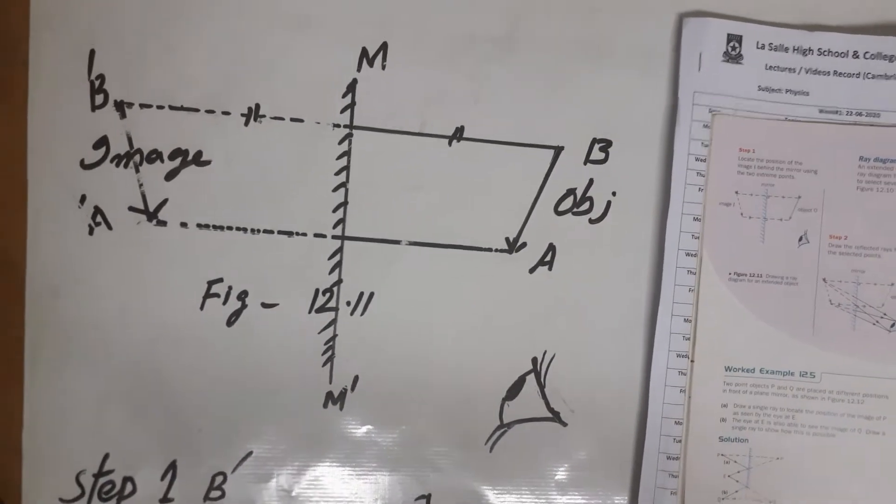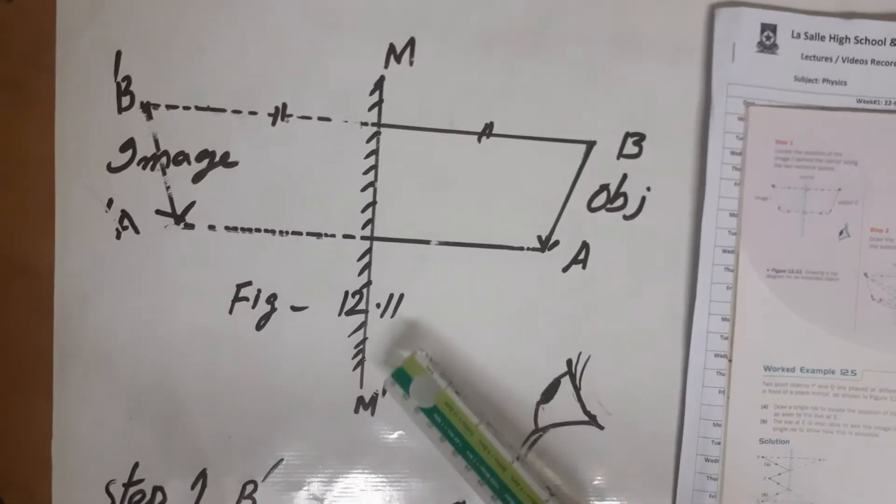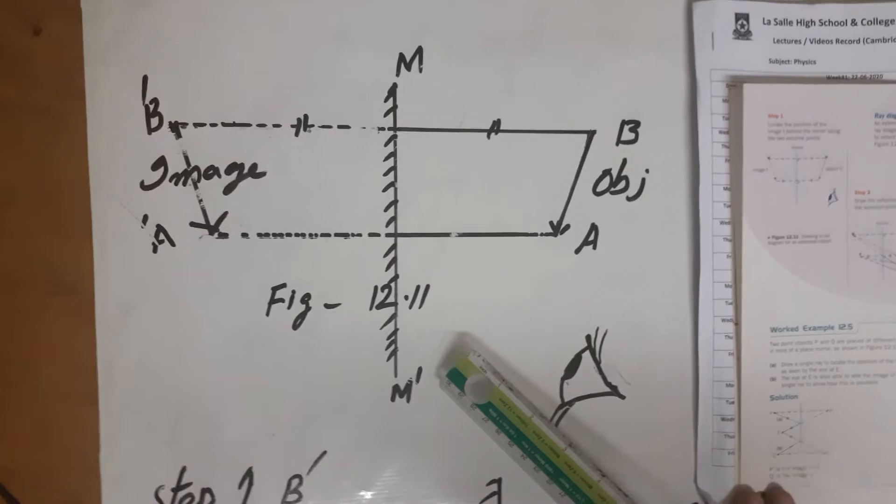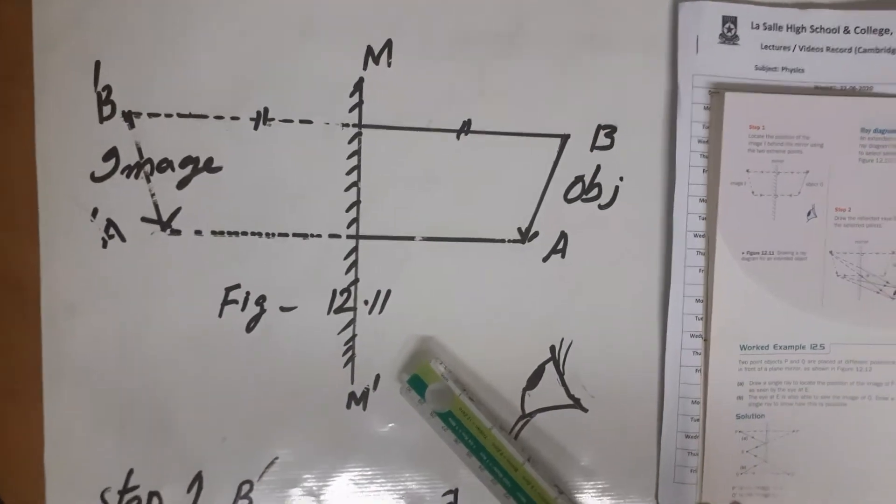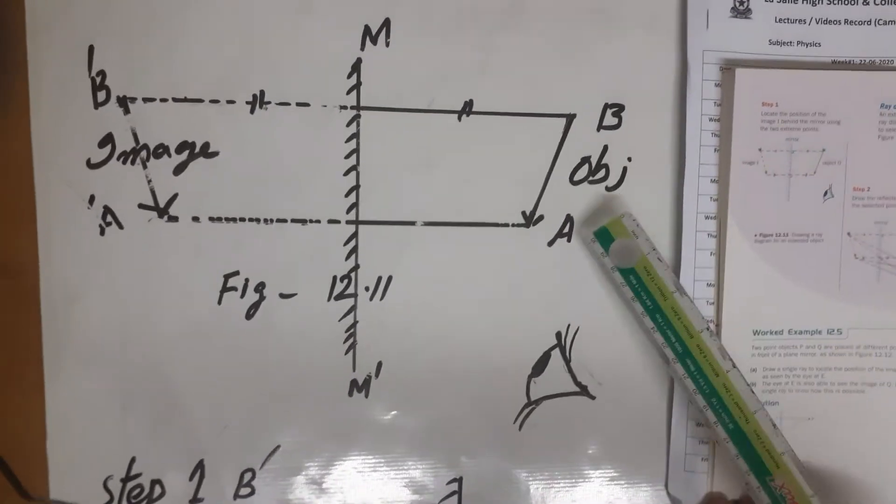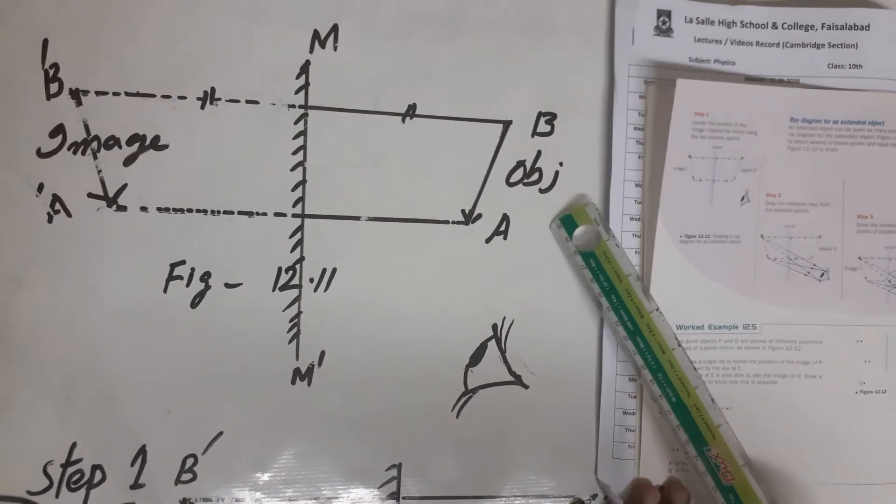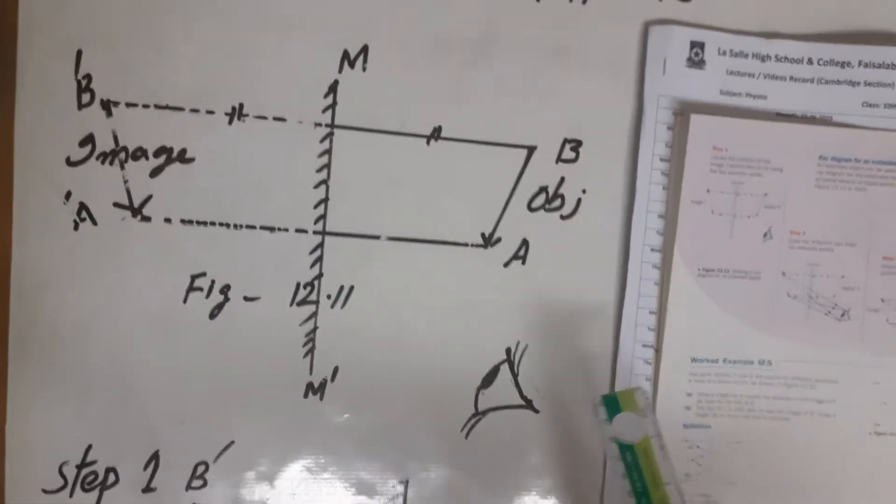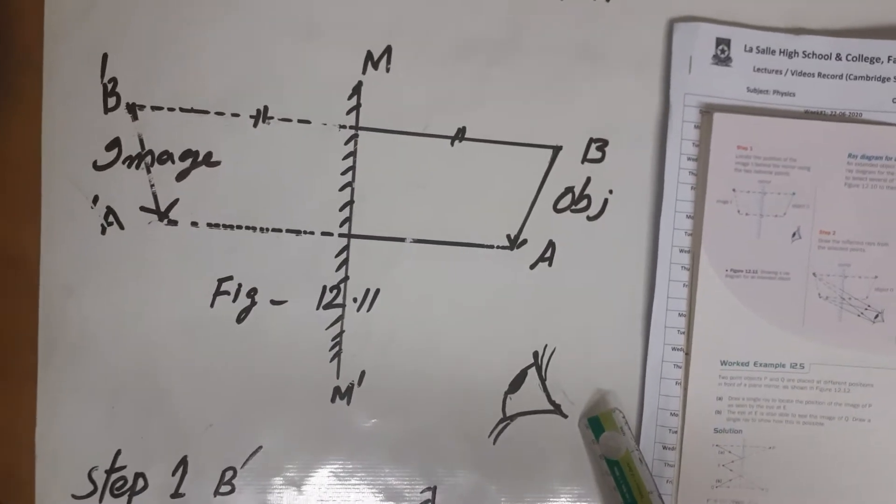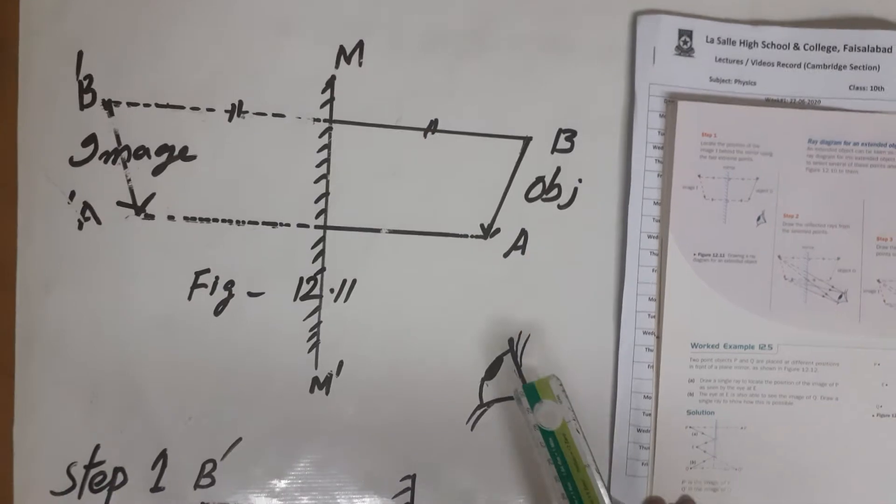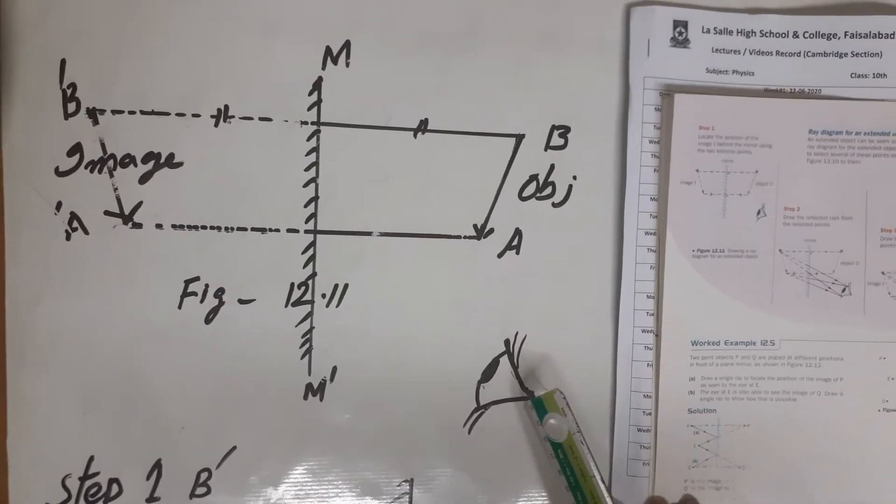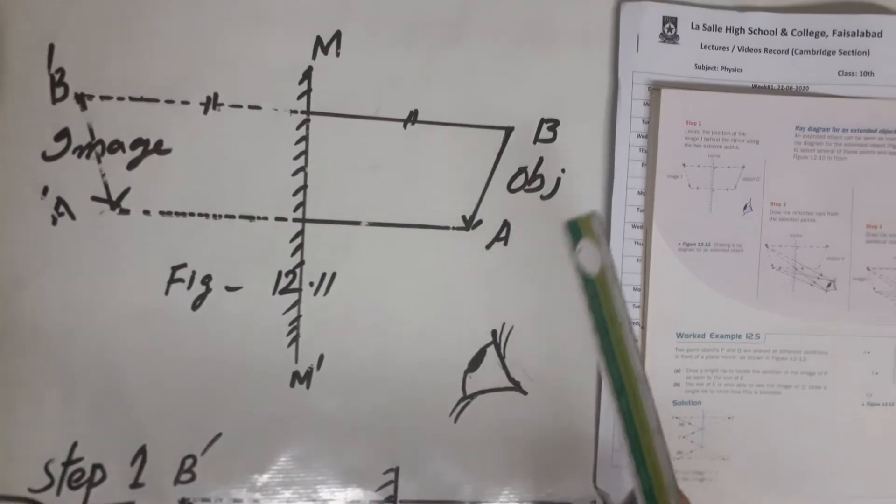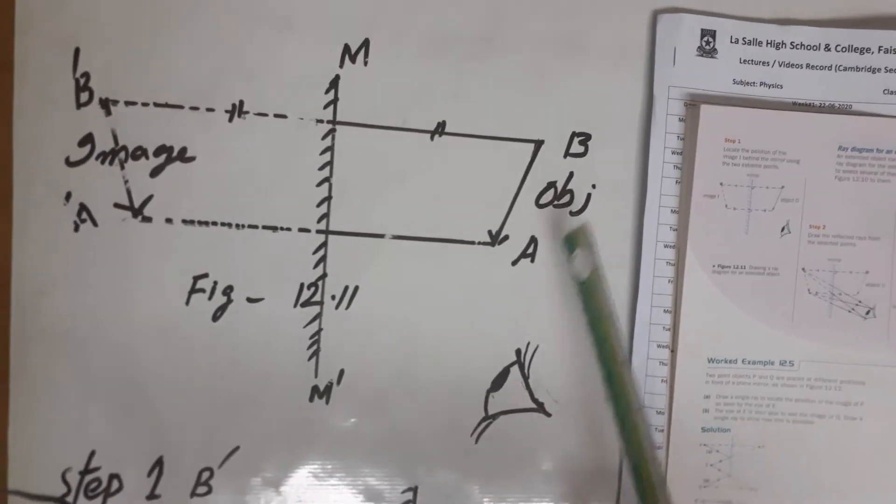Here is M, and AC is a mirror, whereas AB is an object in front of this mirror. This eye observes from this angle the image of this object AB.